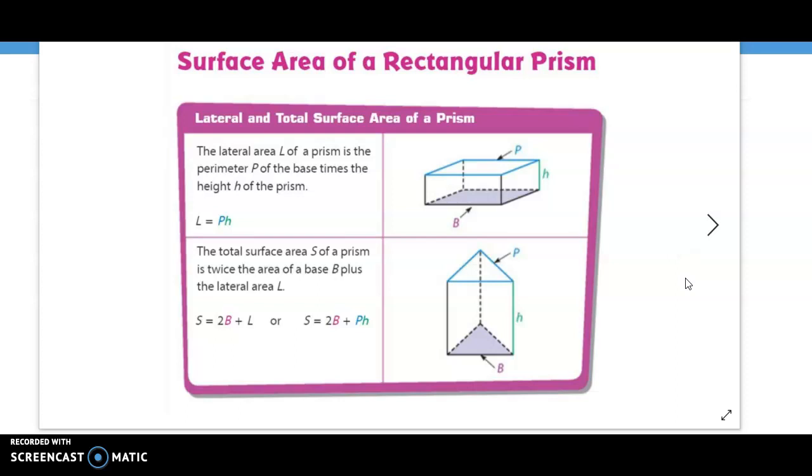Let's look at the triangular prism. We can figure out the perimeter of this base because remember, in a triangular prism, it's the one here at the top and the one that mirrors it here at the bottom. It is the perimeter of the triangle multiplied by the height of the prism. So, the total surface area S of a prism is twice the area of a base plus the lateral area.